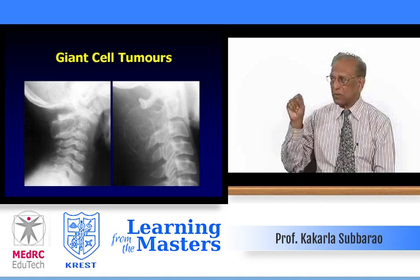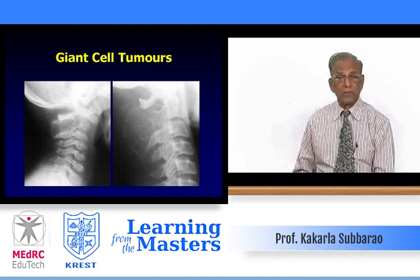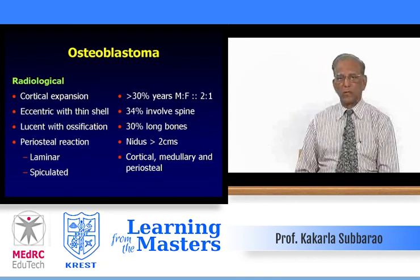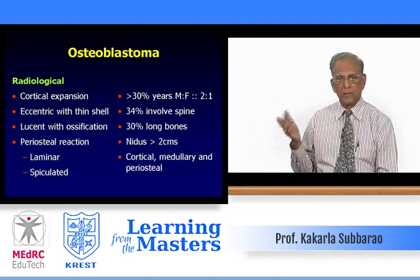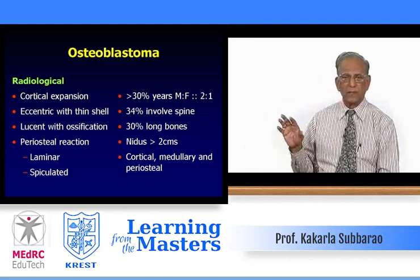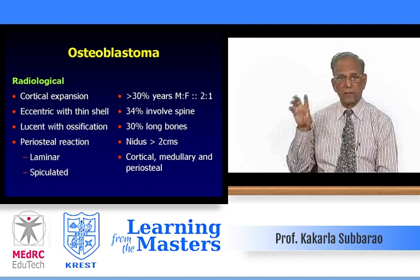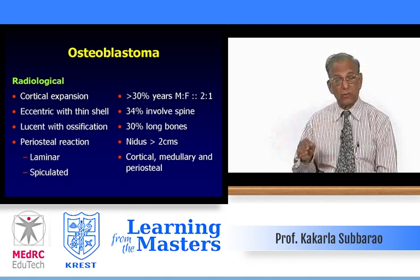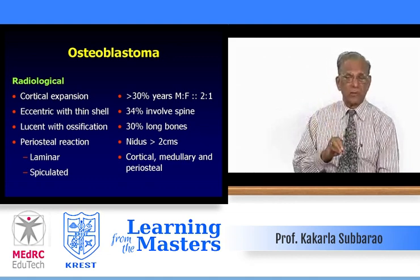Cervical spines — two patients, lateral views. On the left side, the lesion looks benign and is expansile with a sclerotic margin. The matrix has a ground-glass appearance, as seen in fibrous dysplasia — meaning osteoid is present but not properly mineralized to form bone. Regarding osteoblastoma: clinically, males predominate; the condition typically occurs around age 30. About 34 percent involve the spine, particularly the posterior elements, occasionally the body. The major difference between osteoblastoma and osteoid osteoma is that in osteoid osteoma the nidus is less than 1.5 cm, whereas in osteoblastoma it is more than 2 cm.